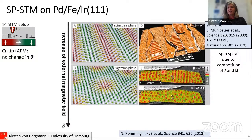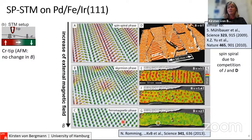If we apply an external magnetic field, the magnetic state changes. We enter a mixed phase of spin spiral and dots. At even higher field, only dots remain, and at two tesla we saturate the sample into the ferromagnetic state. We claim this is a skyrmion lattice phase, as depicted. But how do we actually know that these blobs are really skyrmions? In our experiment they just appear as red blobs.